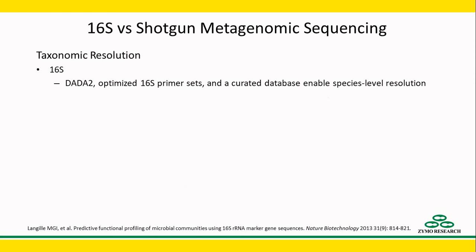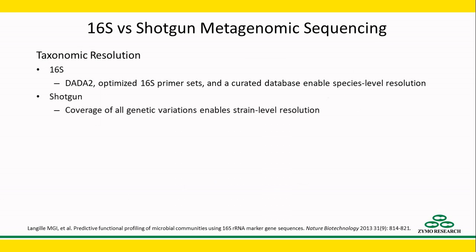With curated databases, the Zymobiomics 16S sequencing service, for example, consistently achieves species level resolution. But in theory, shotgun metagenomic sequencing can achieve strain level resolution, since it can cover all genetic variations. This can be helpful for distinguishing between commensal and pathogenic strains of the same species.